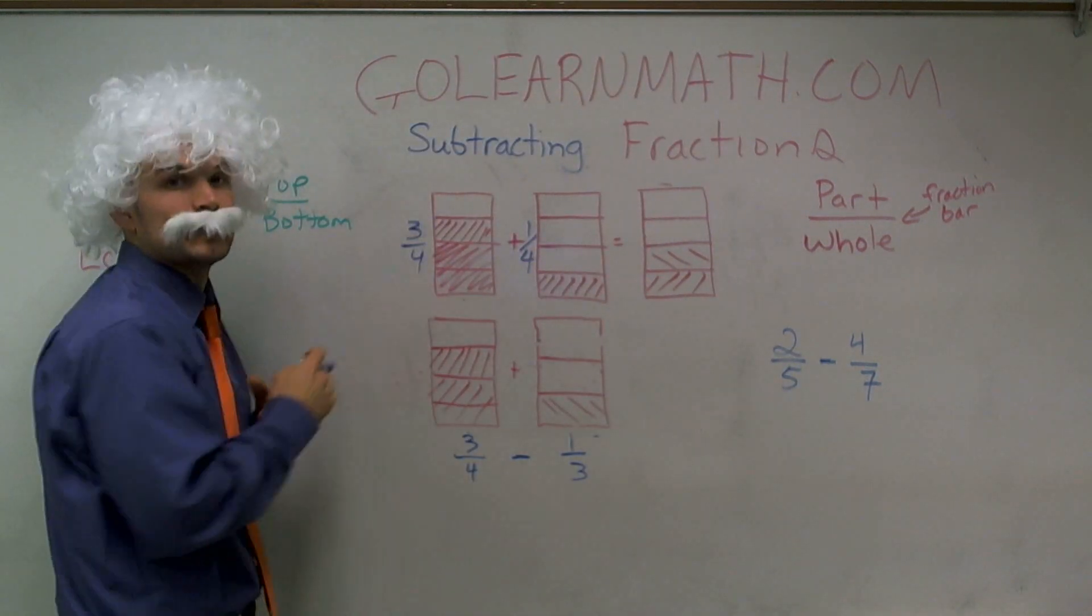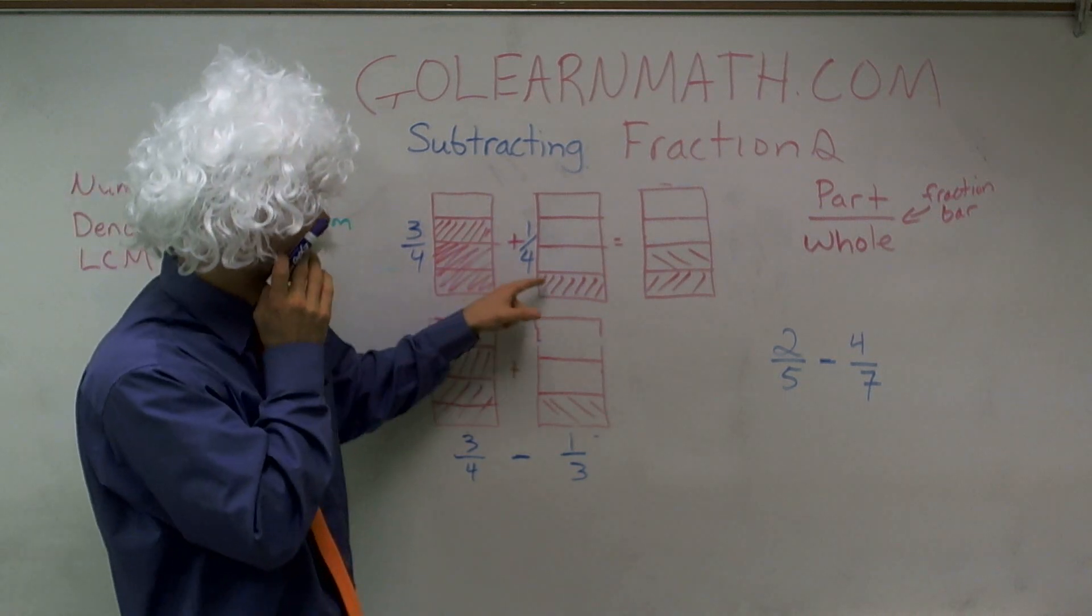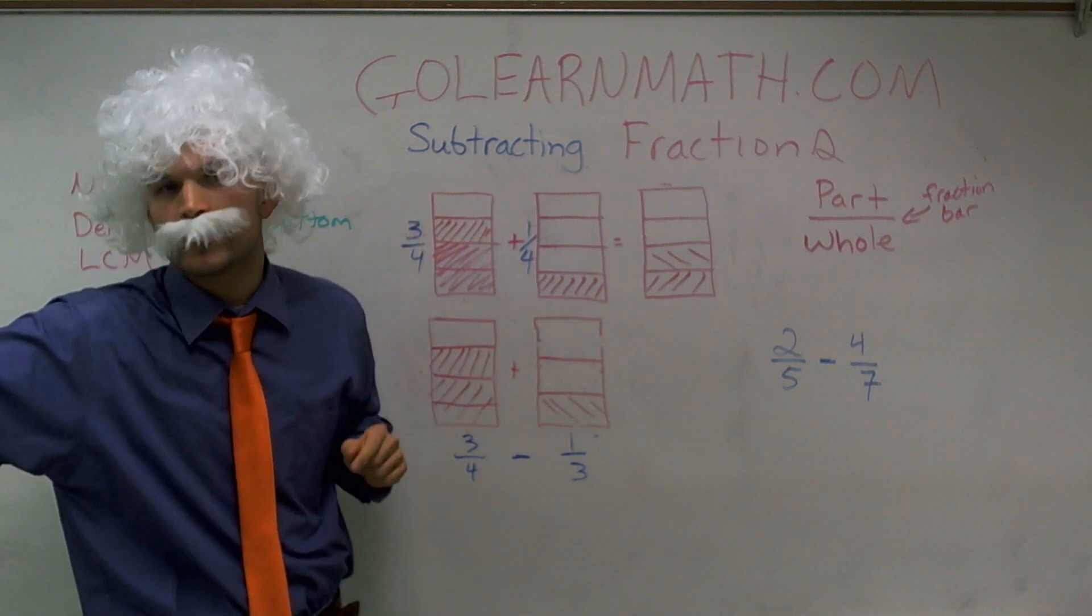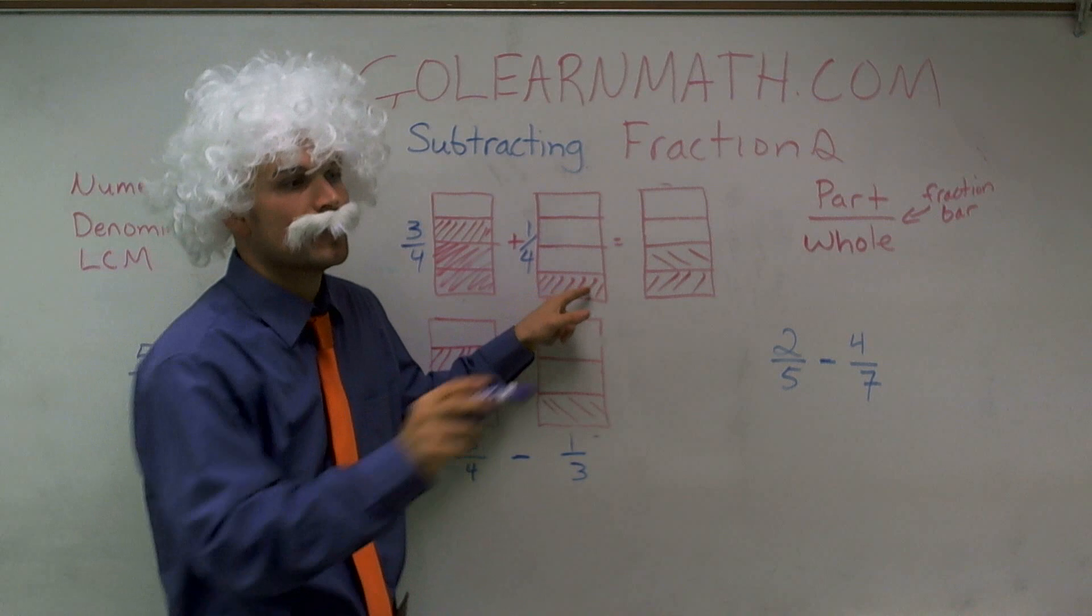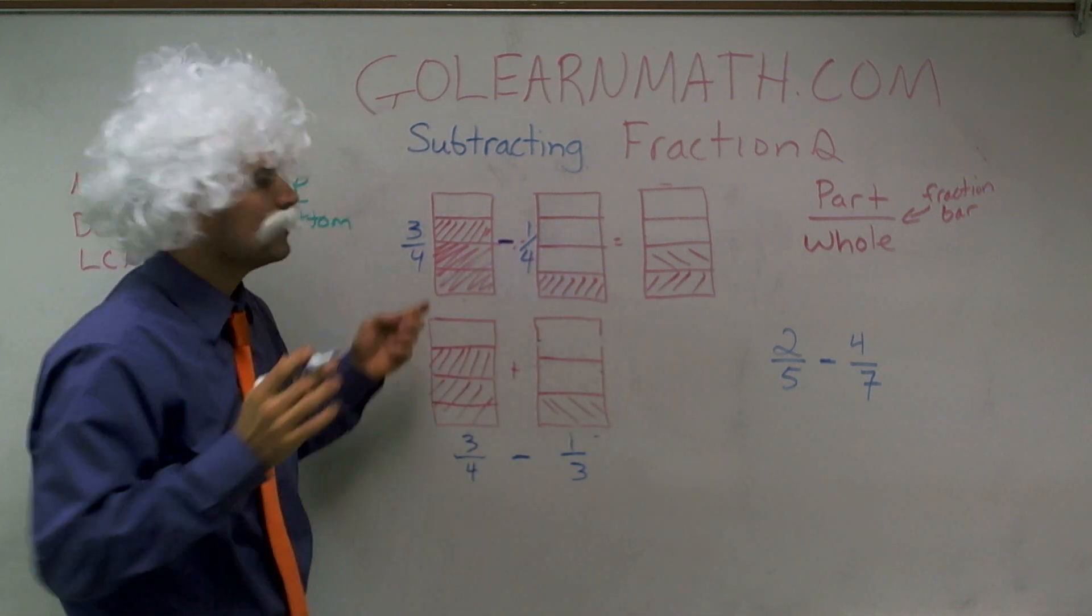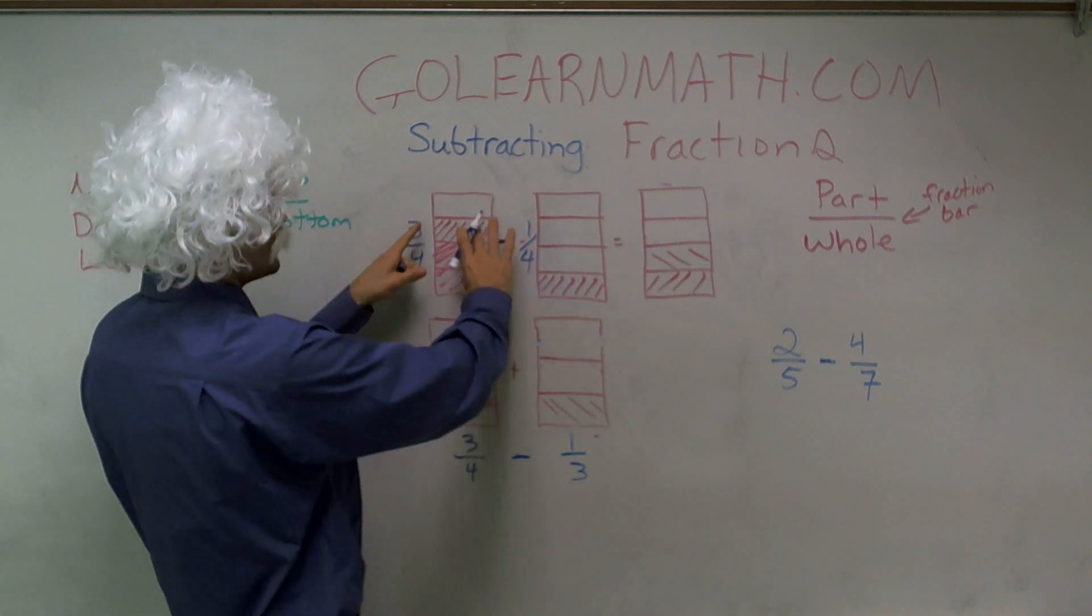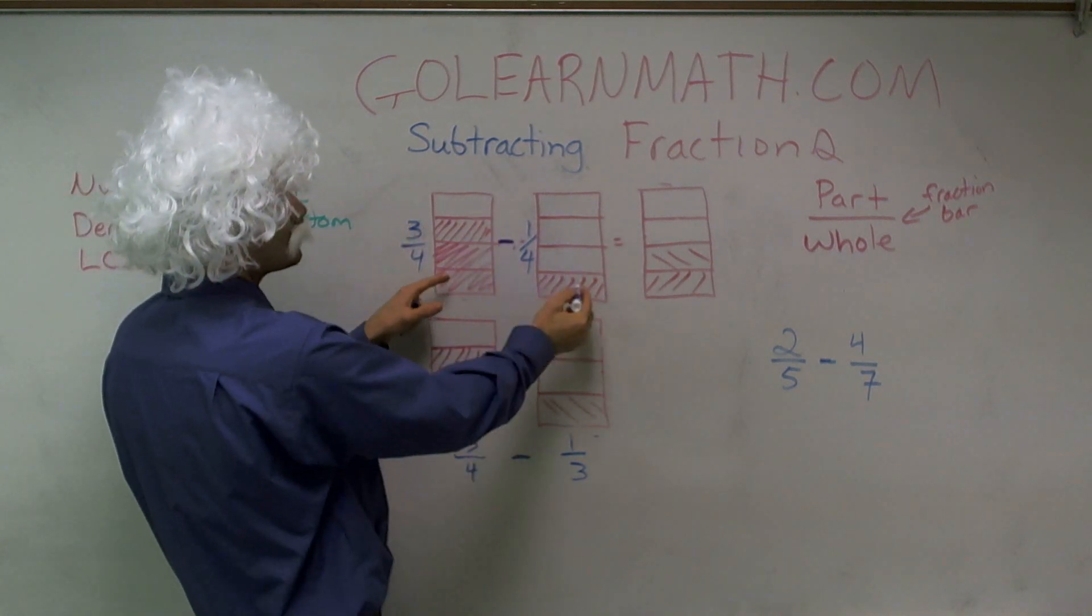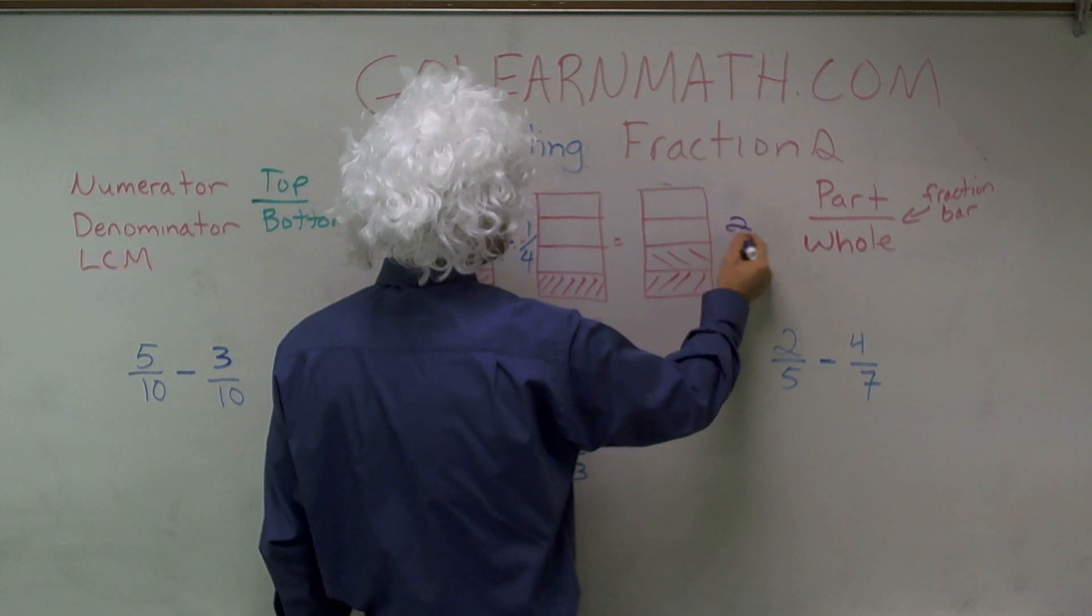So I said I have three fourths of a candy bar. I'm going to subtract. I already gave away one to my friend Fred. But now, Jessica over here, I want to give her a part. So I'm going to say three fourths minus one fourth. How much am I left with? So if I take these three sections, subtract one more, I'm left with two fourths.